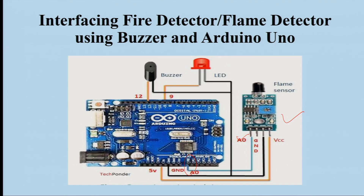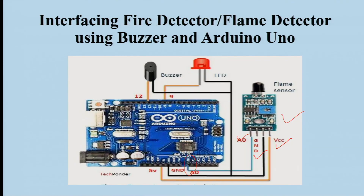Along with this, the VCC and ground terminals are also connected. And on the other side, a buzzer as well as a LED is shown connected. This is a general interface that you can create for your fire sensor circuit diagram.